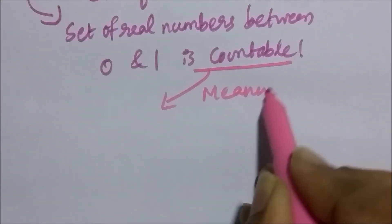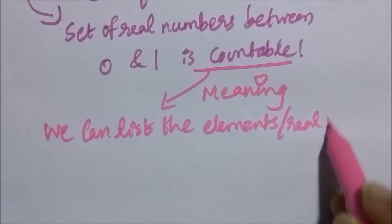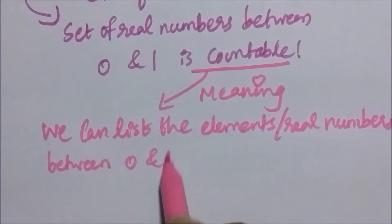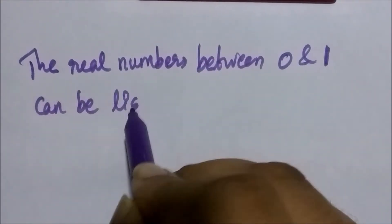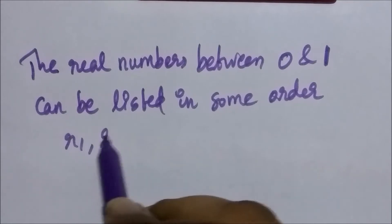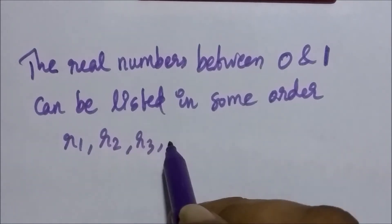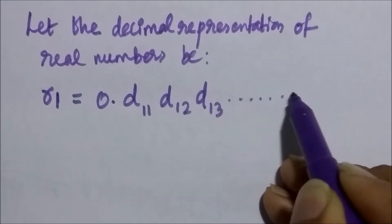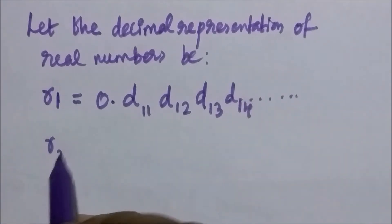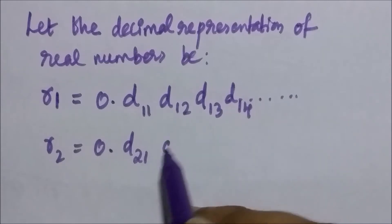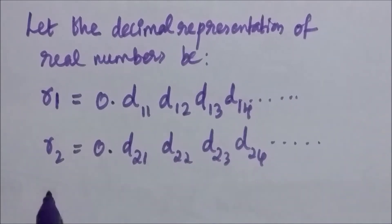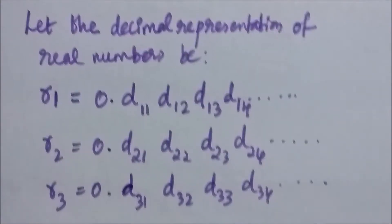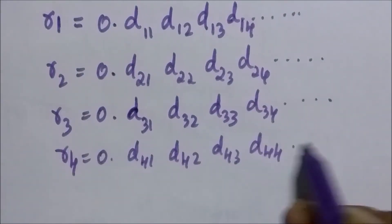Meaning that we can list the real numbers between 0 and 1 in a sequence. Since the set of real numbers between 0 and 1 is countable, we can list them in some order R1, R2, R3 and so on. Let the decimal representation of the real numbers be: R1 = 0.D11, D12, D13, D14 and so on; R2 = 0.D21, D22, D23 and so on; R3 = 0.D31, D32 and so on; R4 = 0.D41, D42 and so on. Similarly the list continues.